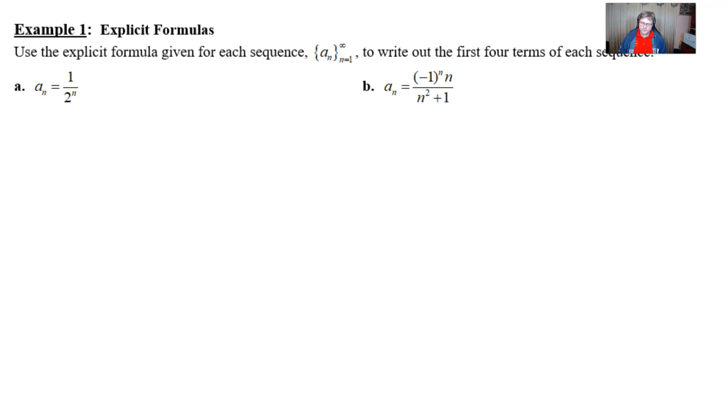So, we move on to our first official example here. And it asks us to use the explicit formula for each given sequence, and you notice that notation a sub n where n goes from 1 to infinity, to write out the first four terms. So, that's all we're going to do. We're going to practice writing out some terms.